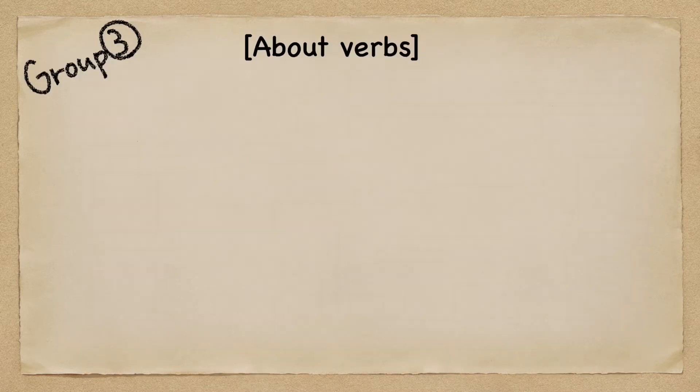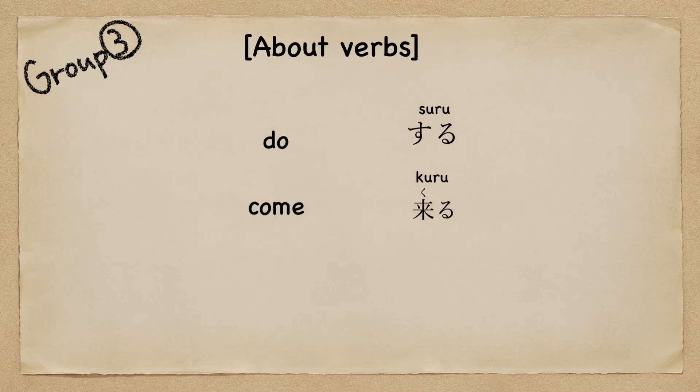How is Group 3? Group 3 has only two verbs: 'do' — suru, and 'come' — kuru.